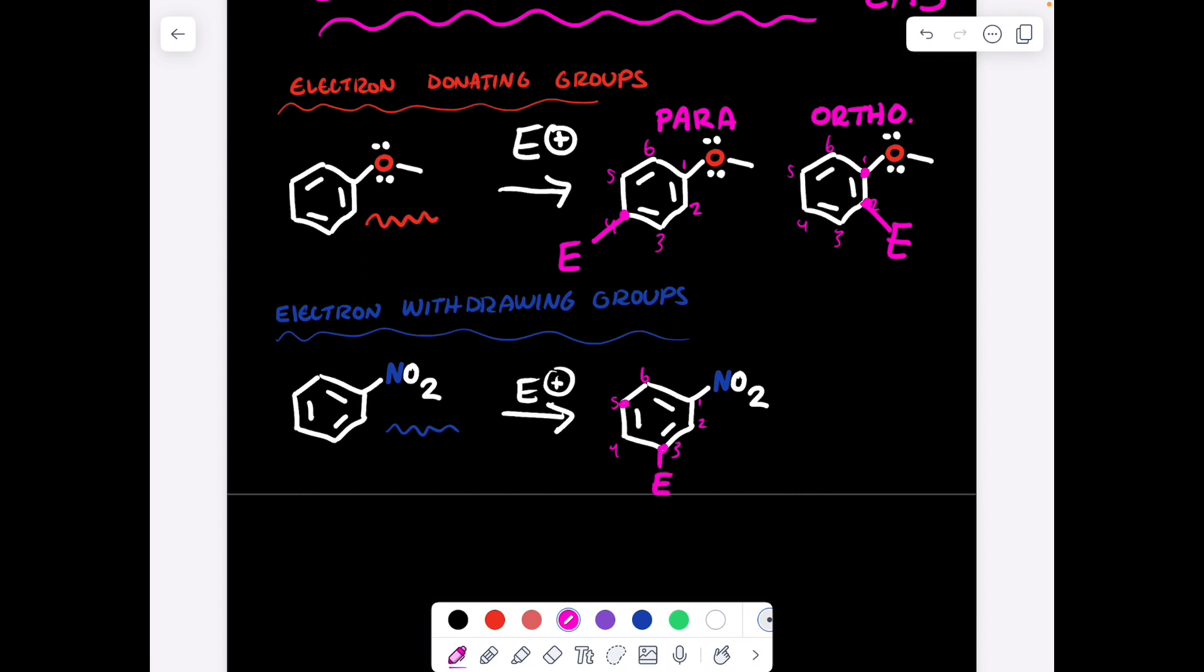And assuming we're only adding in one E+, it would add to the three or the five, where these would be equivalent structures. And this would be the meta position.